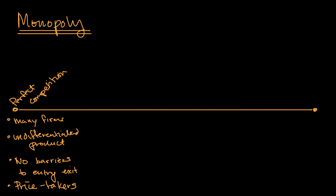Now the other extreme, this is where we have the monopoly. Here, instead of many firms selling or many firms producing, you have exactly one firm producing. Instead of an undifferentiated product, it's differentiated because it's the only firm. Instead of no barriers to entry or exit, here we're at the exact opposite.